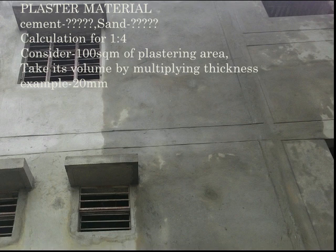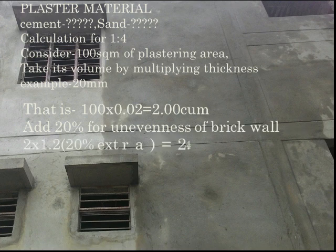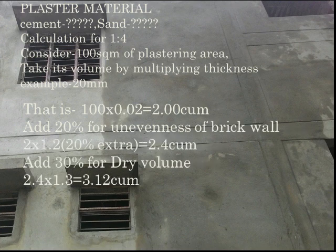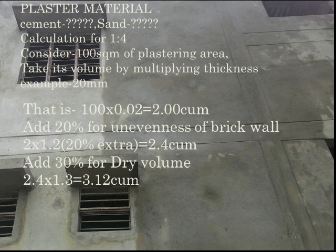Consider 100 square meters of plaster area and take its volume by multiplying by its thickness. This may also be changed as per requirement. For example, I have taken 20 mm thickness, so that is 100 x 0.02 equal to 2 cubic meters.